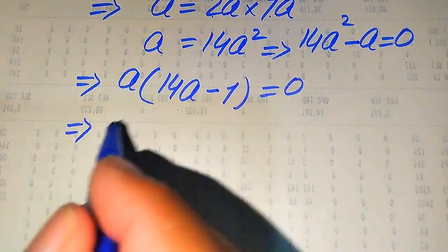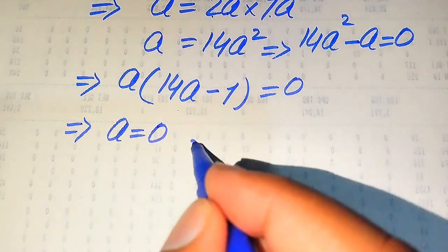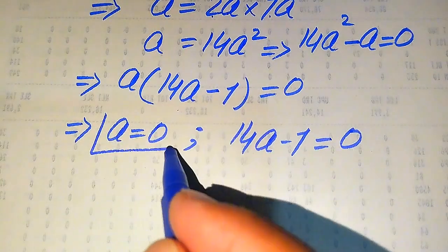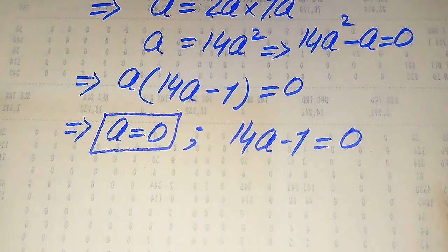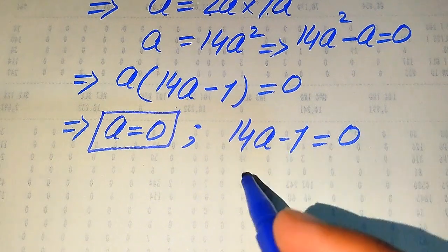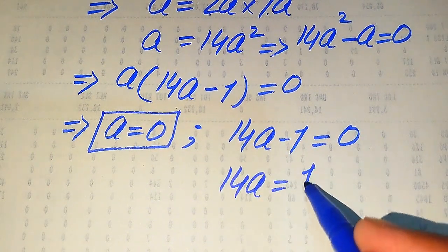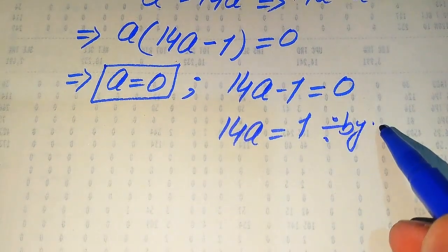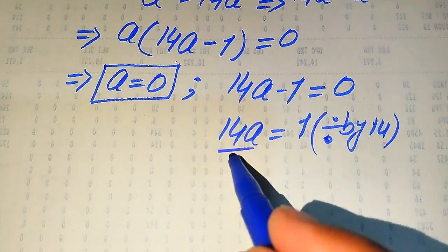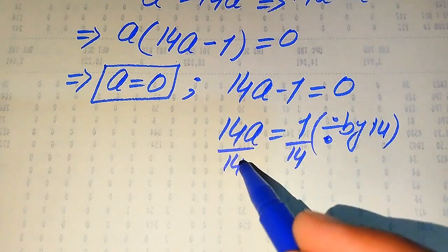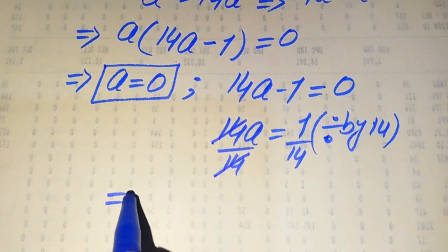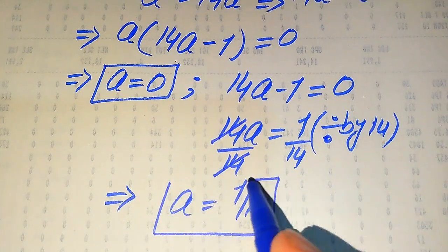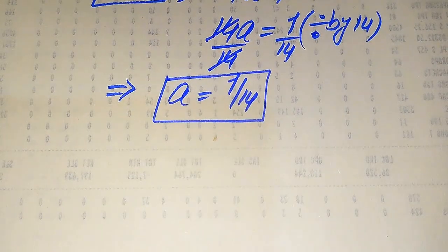We divide this equation into two cases. The first case is a equals zero, and the second case is 14a minus 1 equals zero. The first case gives us our first root. For the second case, we move minus 1 to the right hand side: 14a equals 1. Dividing both sides by 14, we get a equals 1 divided by 14. So these are our two values of a.